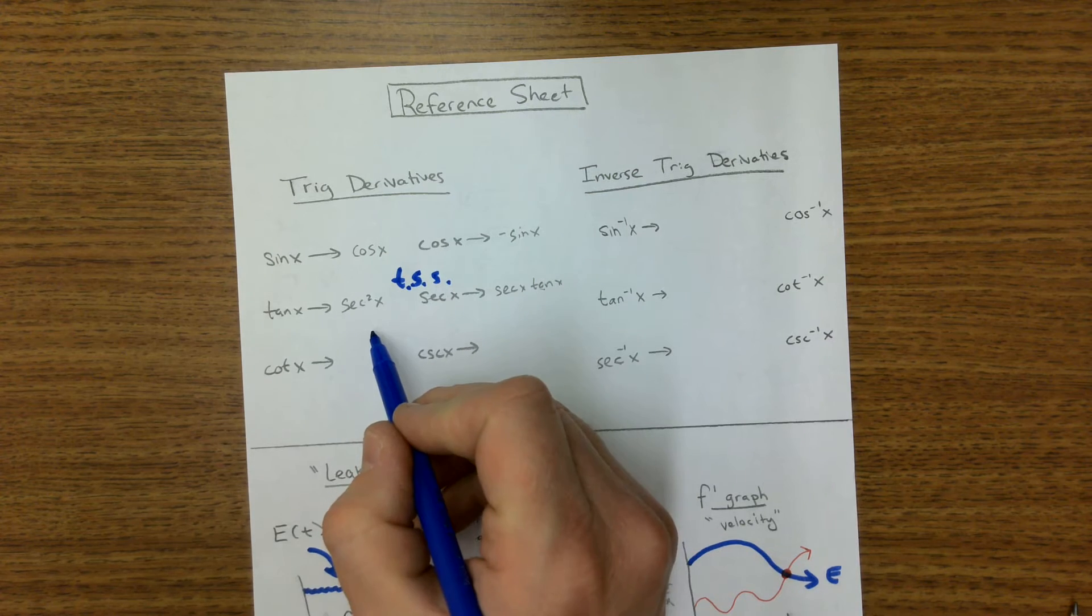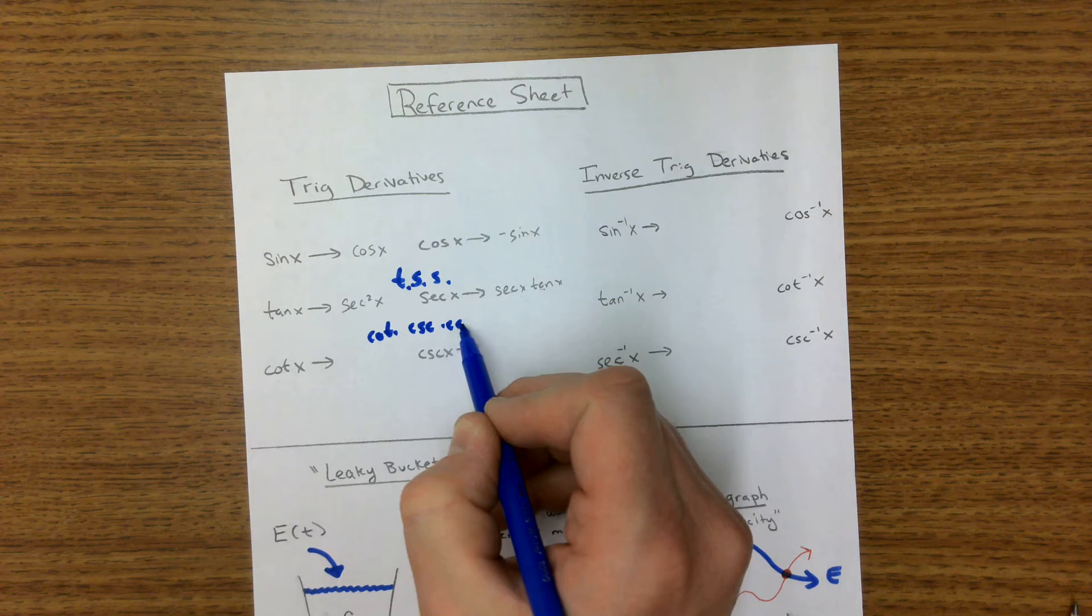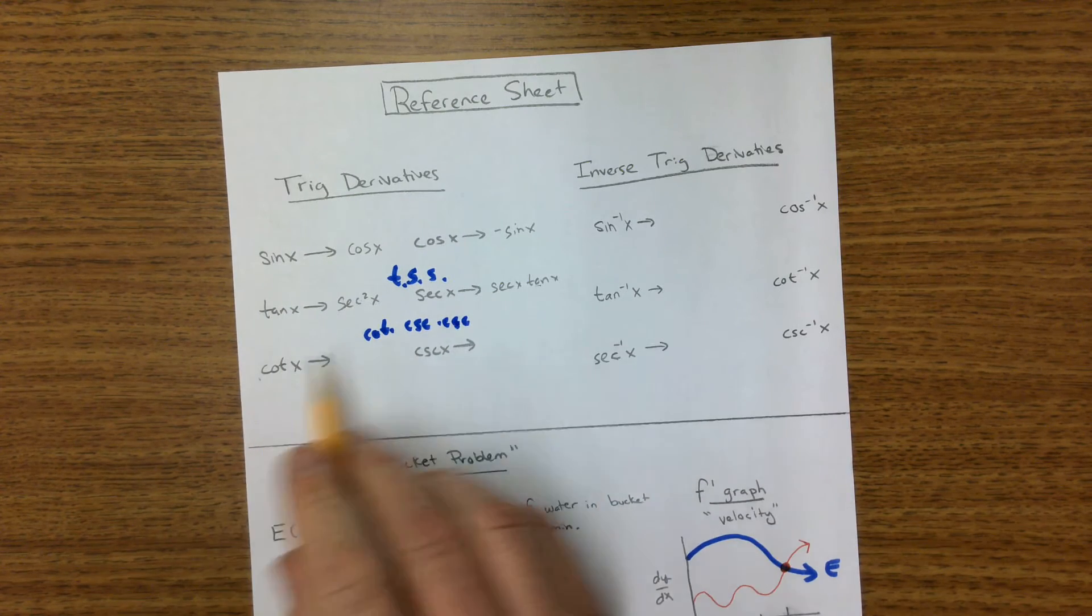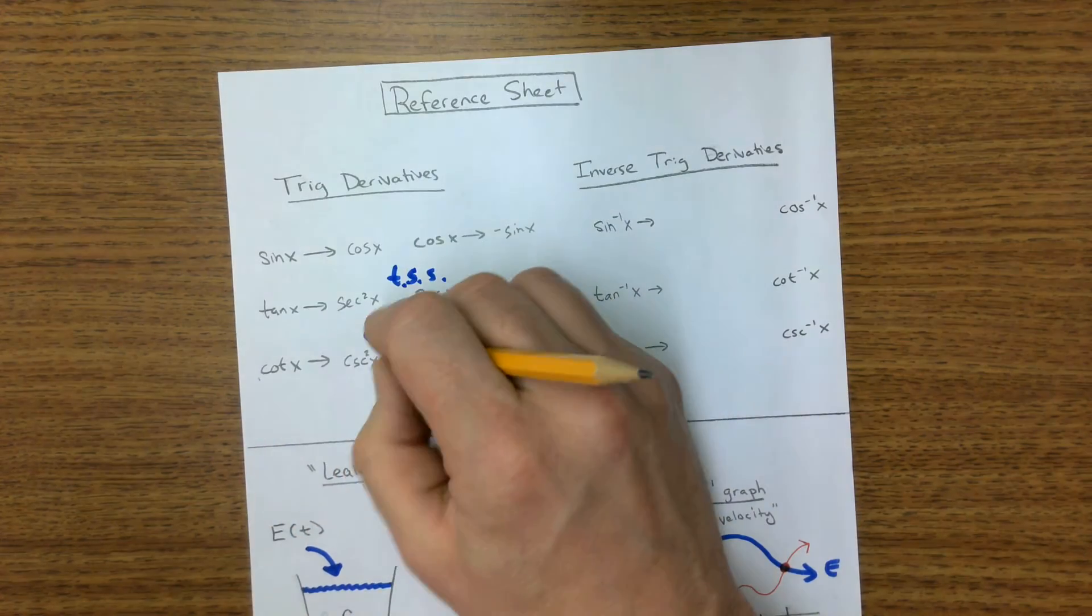And so this one, if you have a cotangent, you're left with two cosecants. So those go there. We should put this squared right there. And if you have one cosecant, you're left with a cosecant and a cotangent.